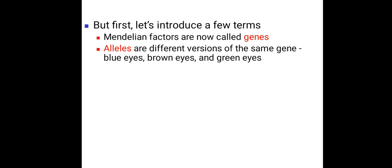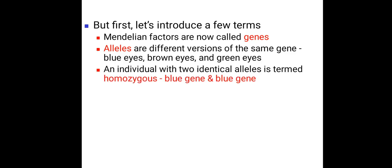But first, let's introduce a few terms. Mendelian factors are now called genes. Alleles are different versions of the same gene, like blue eyes, brown eyes and green eyes. An individual with two identical alleles is termed as homozygous individual, for example, blue gene and blue gene.